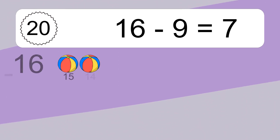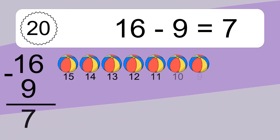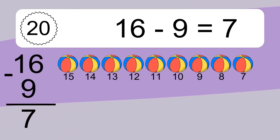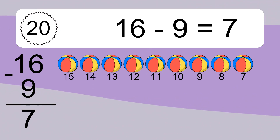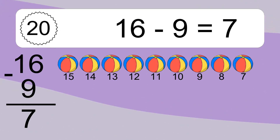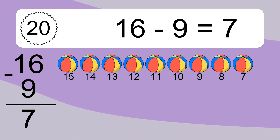16 minus 9 equals what? 16 minus 9 equals 7. Let's count it: 15, 14, 13, 12, 11, 10, 9, 8, 7.